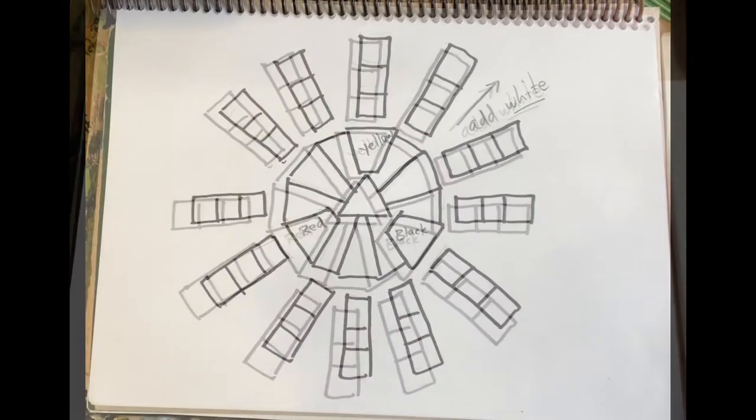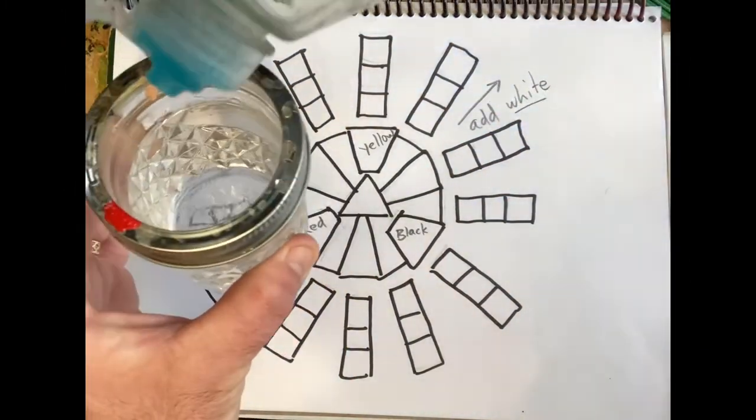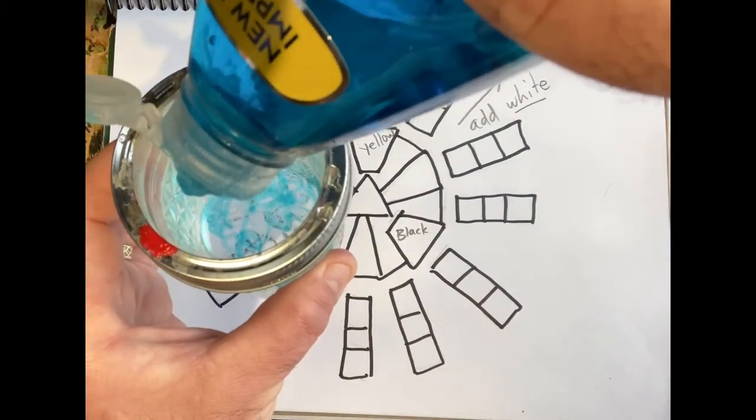So now I'm ready to paint. Let me show you a few things you might need. I have a glass jar with water in it and I add some liquid detergent so you can wash your brushes.